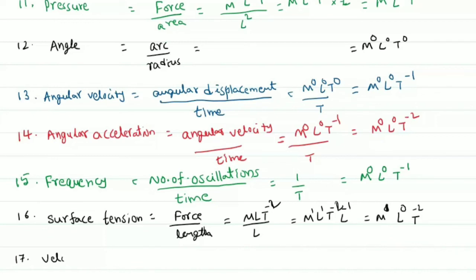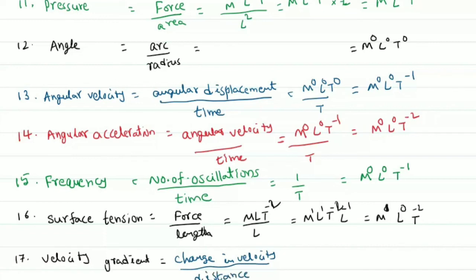Next is velocity gradient. Velocity gradient is change in velocity per unit distance. Velocity has dimensions M power 0, L power 1, T power minus 1, divided by distance L power 1, giving M power 0, L power 0, T power minus 1.